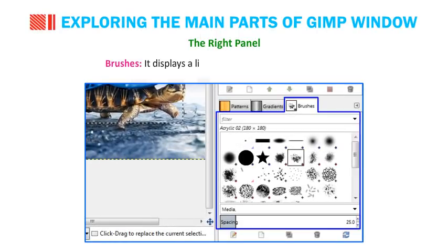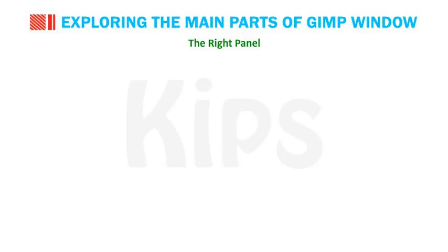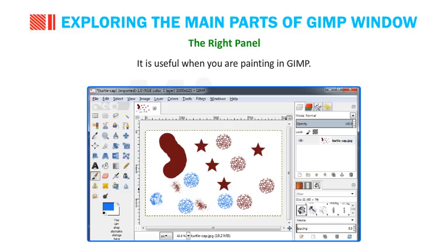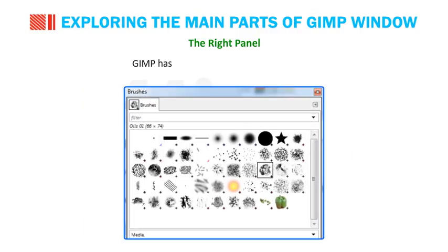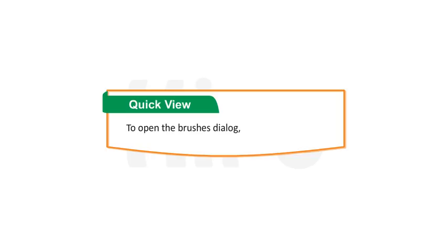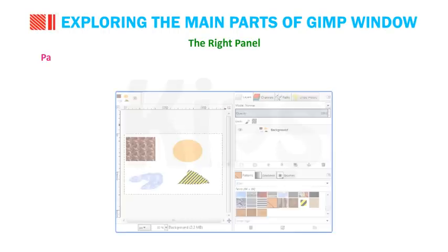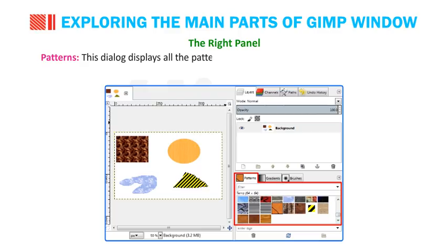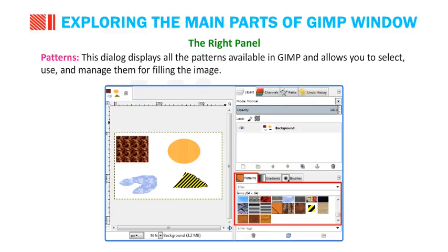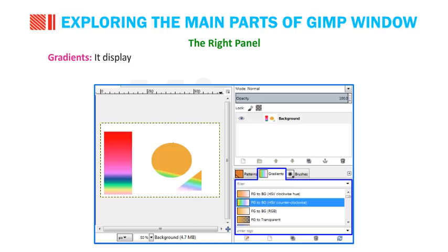The Brushes dialog displays a list of brush types available in GIMP. It is useful when you are painting and allows you to select and edit brushes. GIMP has a total of 56 different brush types. To open the Brushes dialog, press Shift+Ctrl+B. The Patterns dialog displays all the patterns available in GIMP and allows you to select, use and manage them for filling the image. The Gradients dialog displays a gradient palette and provides various options to modify gradients. You can select a gradient by clicking on it.